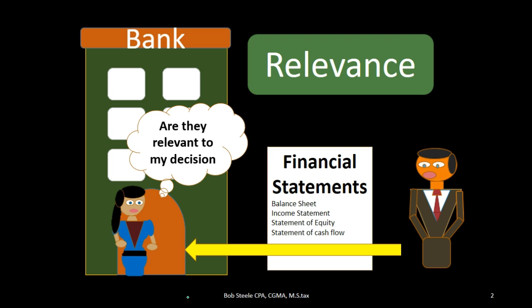Do the financial statements help me make a decision as to whether we should give this business a loan? Of course, the bank wants to give a loan if they can, because that's how they're going to make money on the interest. They would like to make the loan, but they want to make sure that the business owner can repay it. The financial statements should give a picture of past performance and where the company stands at this point in time, which would give an indication of future performance and the ability to pay back the loan.